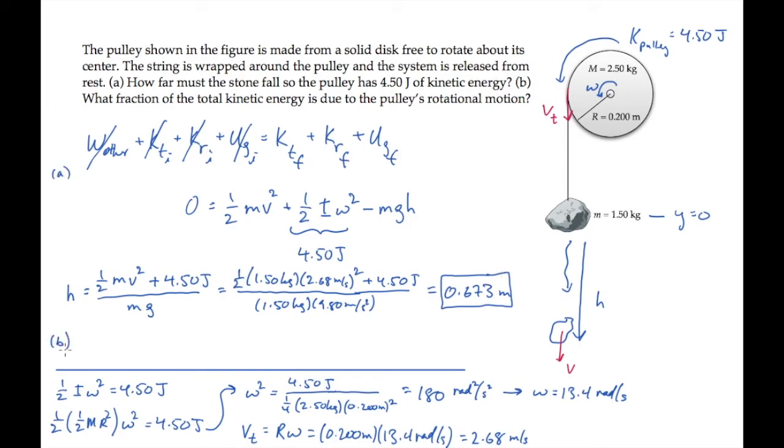Part B asks us to find the fraction of the total kinetic energy that's due to the pulley's rotational motion. The total kinetic energy is the sum of the translational plus the rotational. The translational is due to the stone, half mv squared, and the rotational is due to the pulley, four and a half joules. That gives us this total. The fraction due to the pulley's motion is then its kinetic energy divided by the total, which works out to 45 and a half percent.